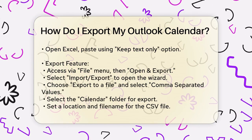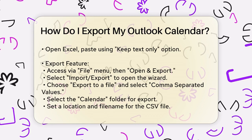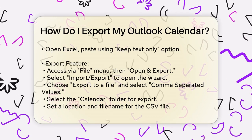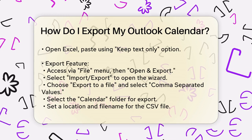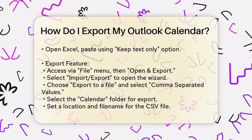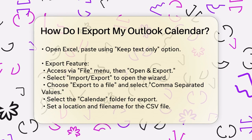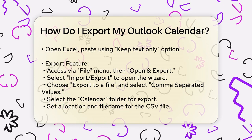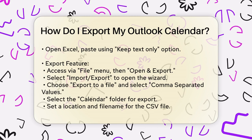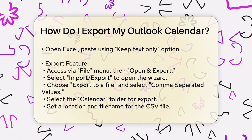Using the Export feature: for a more structured export, you can use Outlook's built-in Export feature. Open Outlook, go to the File menu, and select Open and Export. Then choose the Import/Export option, which will open the Import and Export wizard. In the wizard, select Export to a file and click Next. Choose Comma Separated Values as the file type and click Next again.